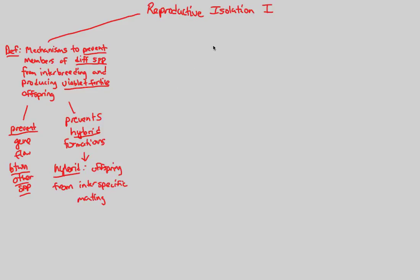Reproductive isolation is pretty broad, but we're going to break it down into two main mechanisms. The first type of reproductive isolation we need to understand is something called prezygotic mechanisms. There are five of these prezygotic mechanisms — we'll go over about three in this video, and then we'll do the other ones in the next video.